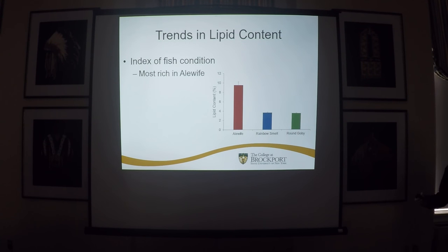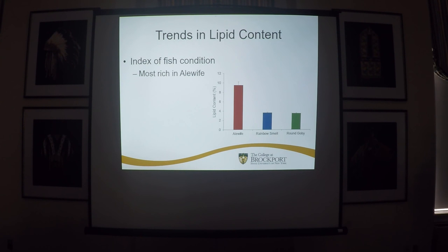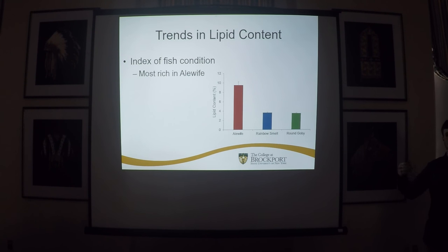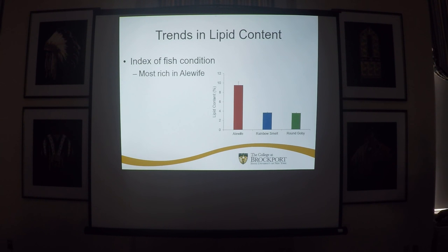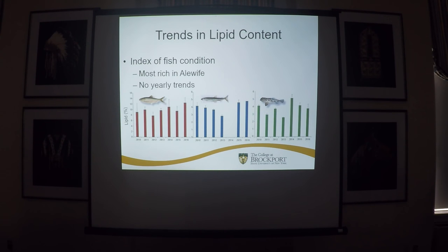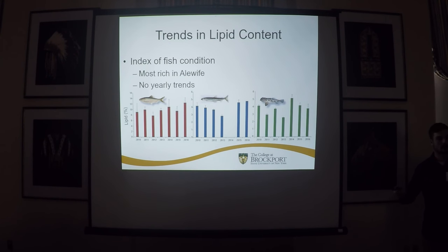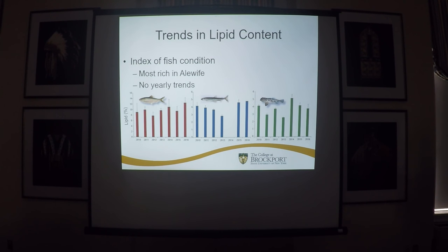The first thing we looked at was trans and lipid content, just looking at three different species across all seasons and years. We saw that alewife have much higher lipid content than the other two species. Lipid content being an index of condition — the higher the lipid content, the higher the condition, and likely the more energy available. We also looked at yearly trends for the three species and saw that there weren't many differences; there's some variation among years, but no trends were visible.